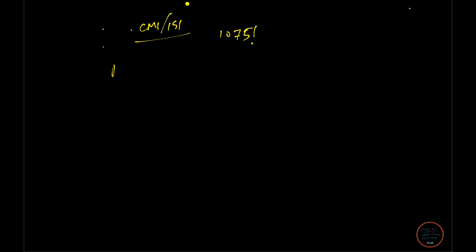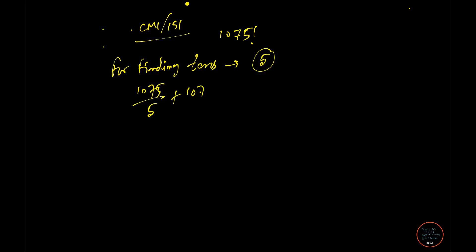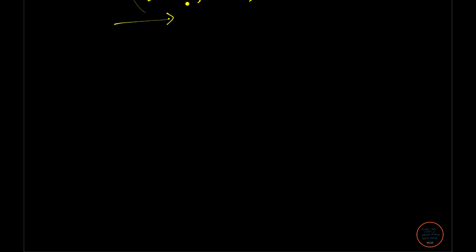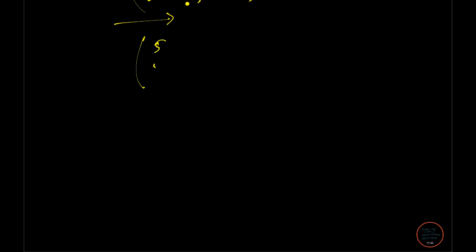A favourite question — also seen in CMI — is: given 1075!, find the total number of trailing zeros. To find trailing zeros we find the exponent of 5: compute ⌊1075/5⌋ + ⌊1075/25⌋ + ⌊1075/125⌋ + ⌊1075/625⌋ and stop there since 5⁵ > 1075. Add those numbers to get the count of zeros at the end.